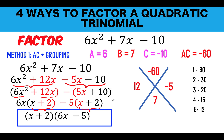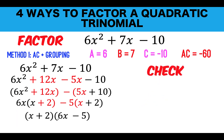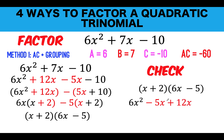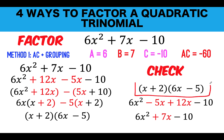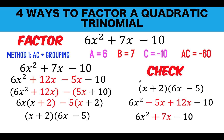Let's check if our answer is correct by performing the FOIL method. First times first is 6x². Outer times outer is negative 5x. Inner times inner is positive 12x. Last times last is minus 10. Negative 5x plus 12x is plus 7x, and we get back the original expression 6x² + 7x − 10. That confirms these are indeed the correct factors. So that is the first method.